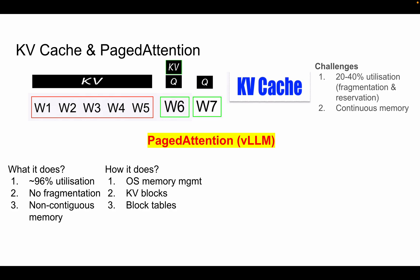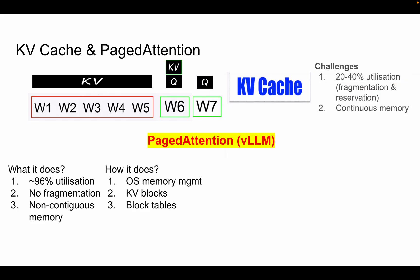The KV cache was expected to be continuous. Let's take an example context length of 4096. What PagedAttention does is split this into something called KV blocks. Let's say we split it into blocks of size 4 — that means 4 tokens per block, until we have 4096 total tokens. So 4096 divided by 4 gives us 1024 blocks total, instead of one single continuous block of 4096.